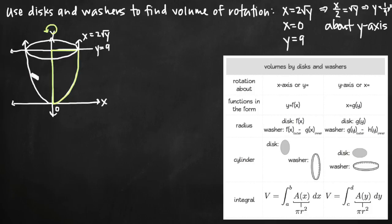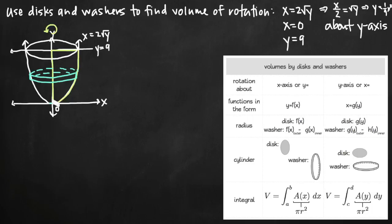We want to draw an approximating disk somewhere on the figure. The idea with disk and washer method is that you use an infinite number of these disks to approximate the volume — you stack them on top of each other, from the smallest at the bottom up through the full height, and an infinitely large number of them approximates the volume. We'll use just one of them and an integral. The width of the cylinder — or its height — is going to be delta y, the change in y.